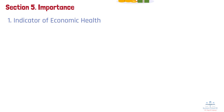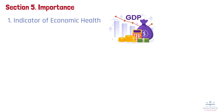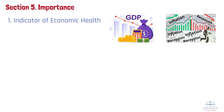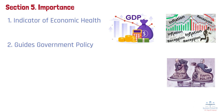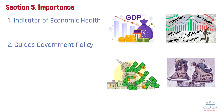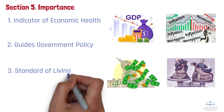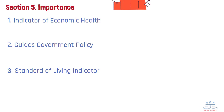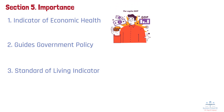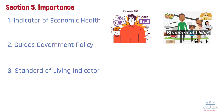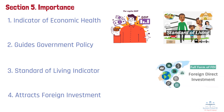Section 5: Importance. Understanding GDP is essential for business practitioners for the following reasons. Number 1: Indicator of economic health — GDP measures a country's total economic output, offering a snapshot of its overall economic health. A growing GDP suggests a thriving economy, while a shrinking GDP can signal a recession. Number 2: Guides government policy — policymakers use GDP data to make decisions on fiscal and monetary policy. For instance, if GDP growth slows, the government might increase spending or cut taxes to stimulate the economy. Number 3: Standard of living indicator — GDP per capita, which divides GDP by the population, helps gauge the average standard of living in a country. Higher GDP per capita usually correlates with better access to goods, services, and infrastructure. Number 4: Attracts foreign investment — a strong GDP growth rate can attract foreign investors, as it indicates a stable and profitable environment for business. This inflow of capital can further boost economic growth and job creation.